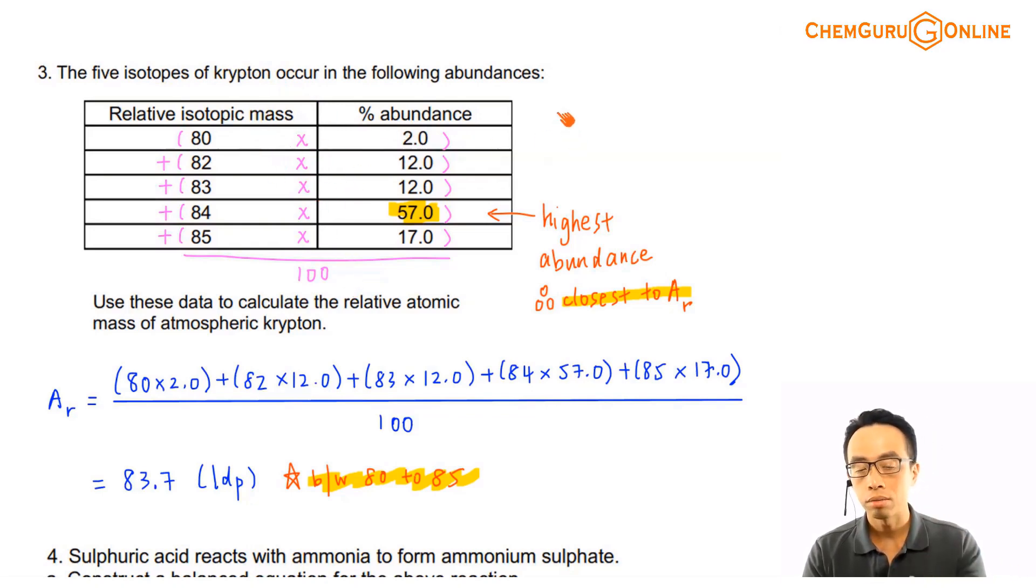The percentage abundance is just, if I have a naturally occurring sample of Krypton, then Krypton has all these different isotopes.